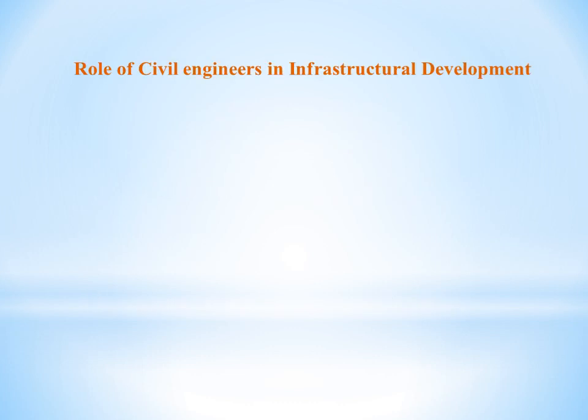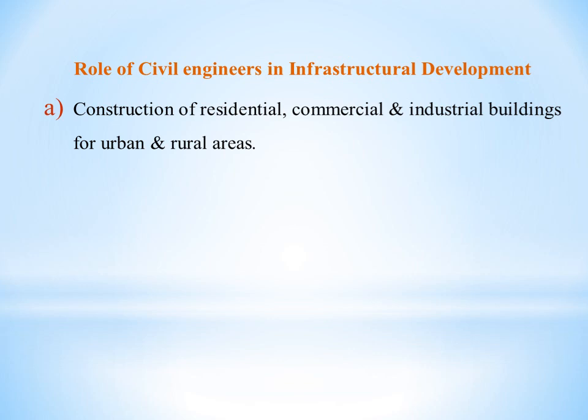In infrastructure development, the role of the civil engineer includes construction of residential, commercial, and industrial buildings for urban and rural areas. That is the first role of a civil engineer. Then comes town and city planning. When we come to Kerala, the first planned town is Alappuzha, which is an example of city planning.